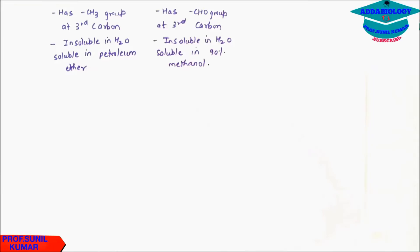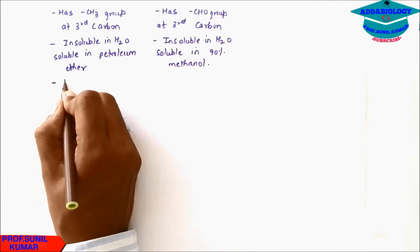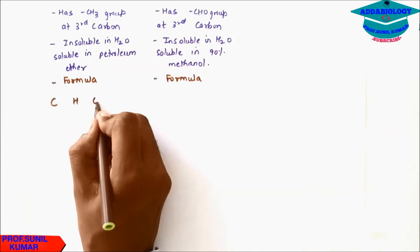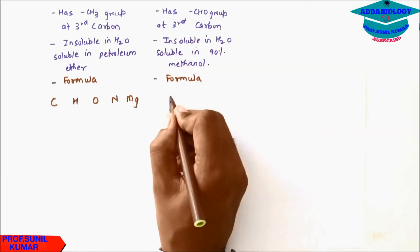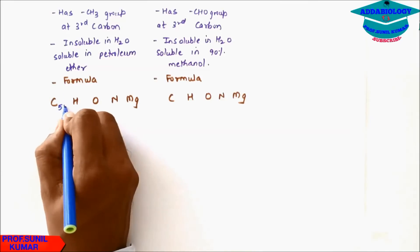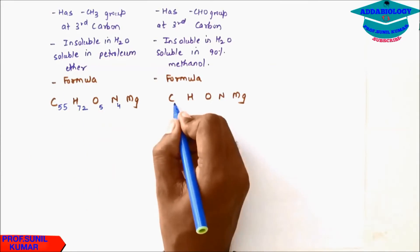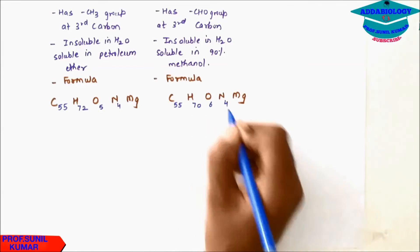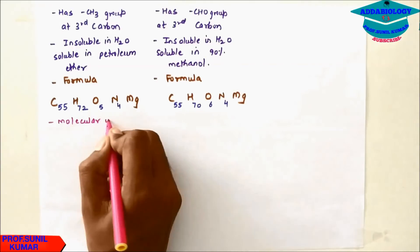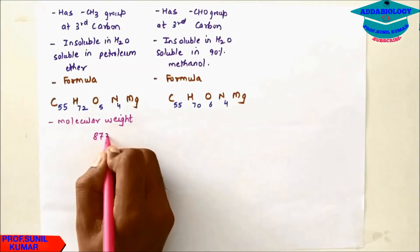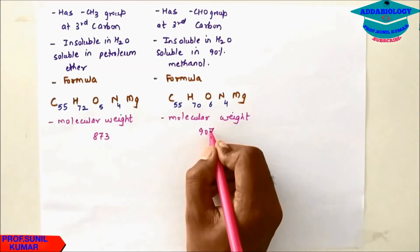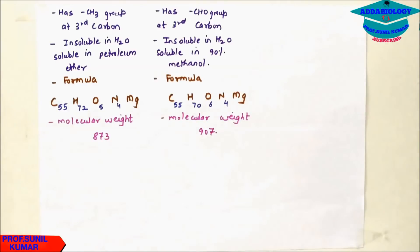For the formula of chlorophyll a and chlorophyll b, the elements involved are carbon, hydrogen, oxygen, nitrogen, and magnesium. The formula for chlorophyll a is C55H72O5N4Mg, and for chlorophyll b it is C55H70O6N4Mg. The molecular weight for chlorophyll a is 873 and for chlorophyll b it is 907.